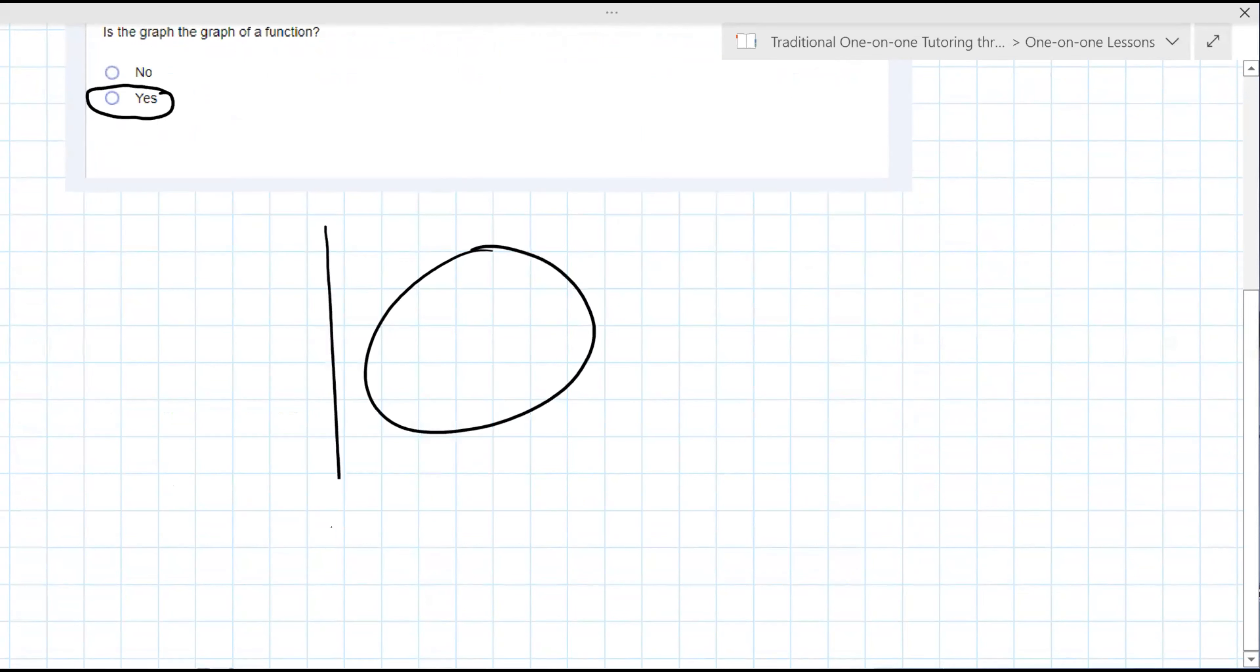I would draw a graph like this and I would say, is this a function? I would tell you, okay, draw a vertical line. How many times does it hit? You would say twice. So this is not a function.